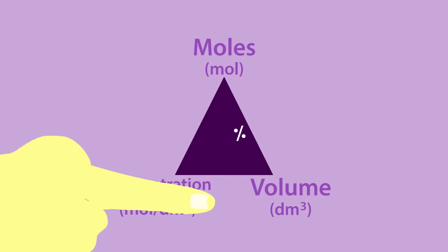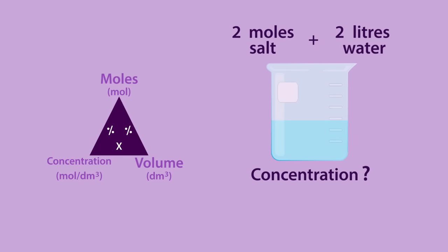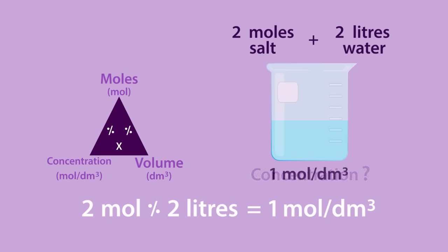Let's try this now. If you have 2 moles of salt and dissolve it in 2 litres of water, use the formula triangle to calculate the concentration of the salt solution. Don't forget the units. Pause, write down your working out, and continue when ready. 2 moles divided by 2 litres is equal to 1 mole per decimetre cubed. Did you get it right? And did you include your units?